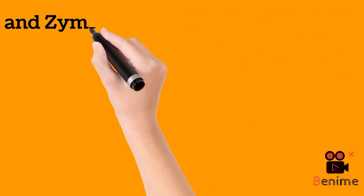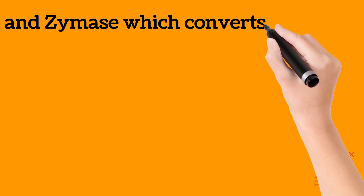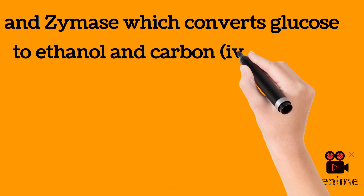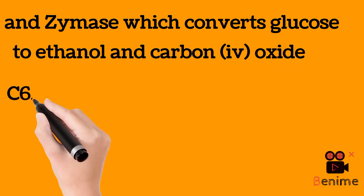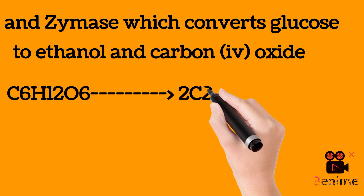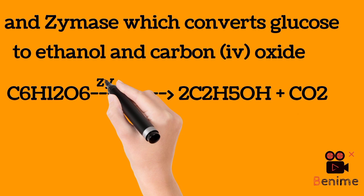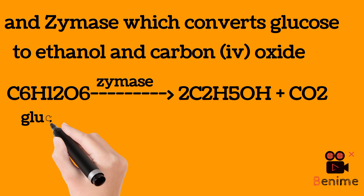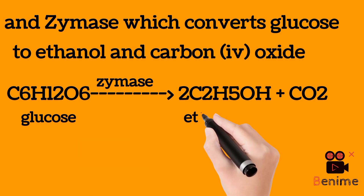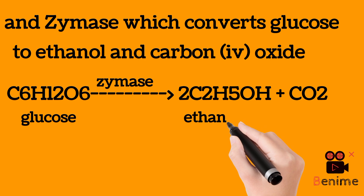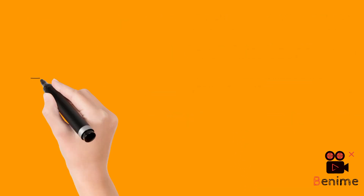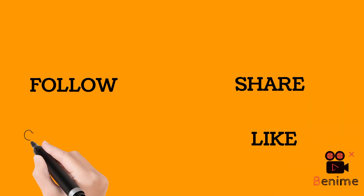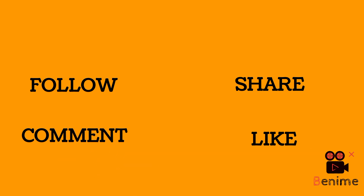The second enzyme is zymase, which converts glucose to ethanol. So ethanol and carbon dioxide are produced from glucose in the presence of zymase. Zymase breaks down glucose and ethanol and carbon dioxide are produced in the process. So the two enzymes from yeast are maltase and zymase. Maltase converts maltose to glucose; zymase converts glucose to ethanol.